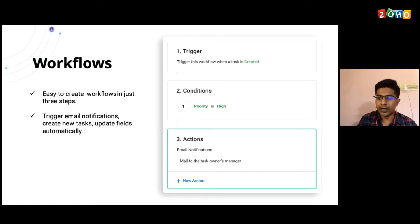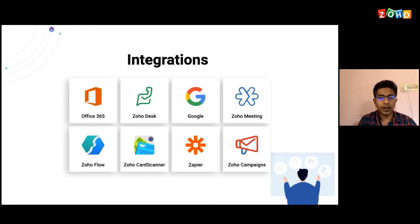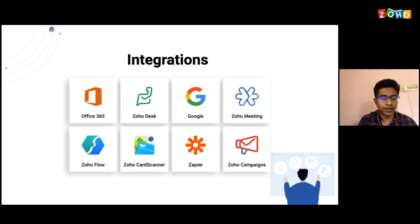Apart from workflows, we also have customized dashboards in Bigin. At the end of the month or quarter, if you want to look at the data and see how much progress you are making as a business, you can switch to the dashboards in Bigin. By default, we have several dashboards — the deal dashboard, contact dashboard, email insight dashboard, and task activities dashboard. You can use the default ones, or if you need more components, you can create your own charts and add them to the dashboard.